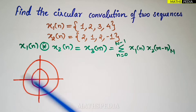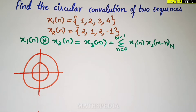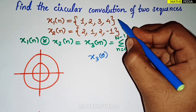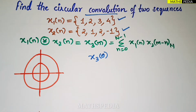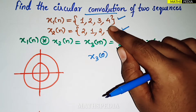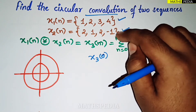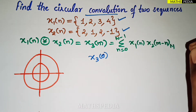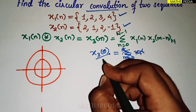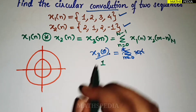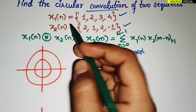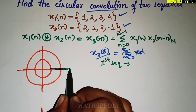We are using the circular array method, which is why I have drawn the concentric circles. The first step is to find x3(0). Always remember in circular convolution, the length of both sequences should be the same — here both have length 4. If a value is not given, take it as 0 to make both lengths equal. This is the reference point.